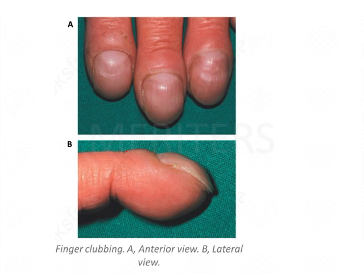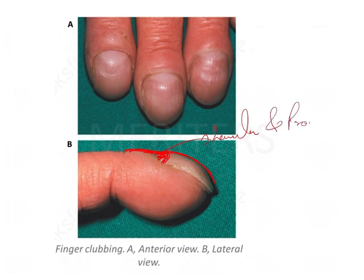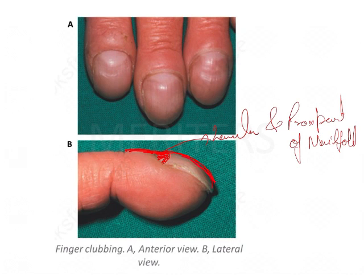To explain further with a clearer diagram: the proximal part of the nail fold, the nail plate, and the lunula — the semicircular structure — are visible here. The angle between the lunula and the proximal nail fold is lost, and the nail pad is quite convex. This confirms the condition is clubbing.